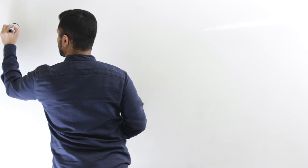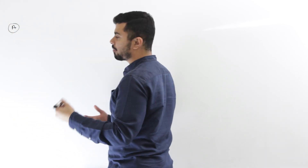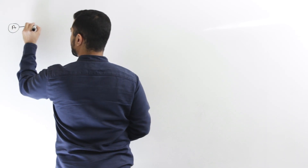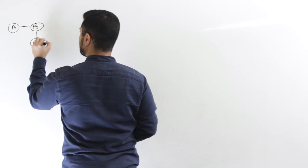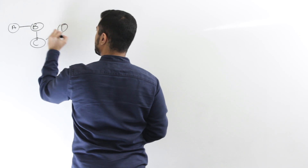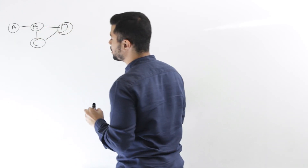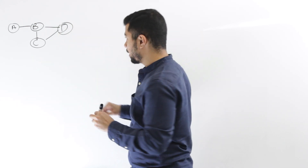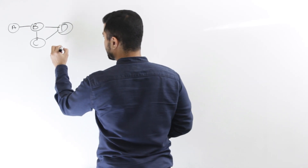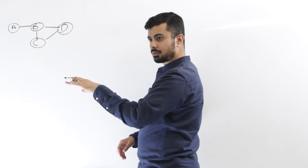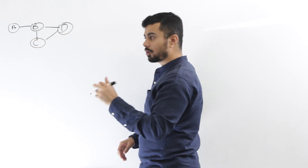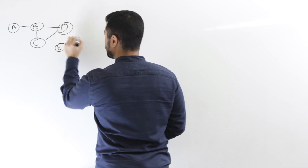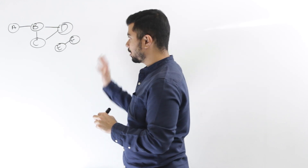So let's say I have a graph, and for each node the value is a letter. So I have a, b, c, d — and let's say d goes back to it. This graph is an undirected graph, and it's also possible that it's a disconnected graph.